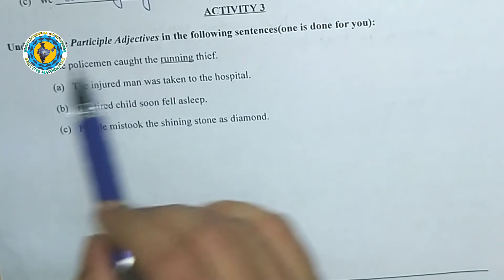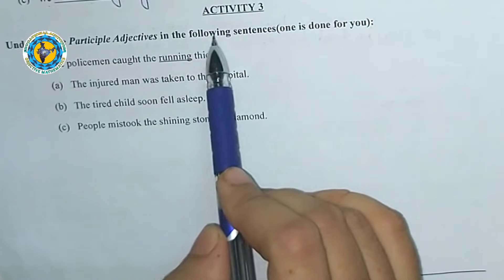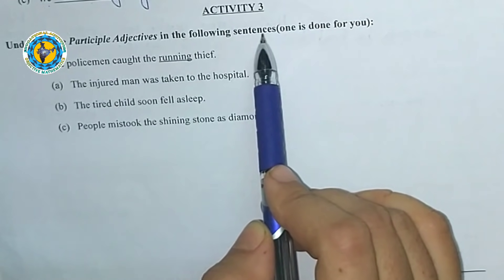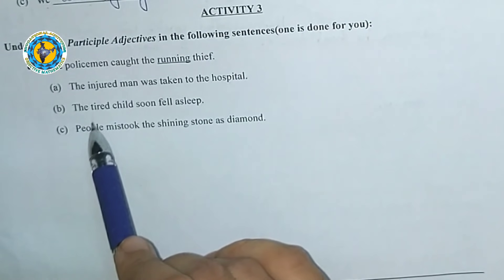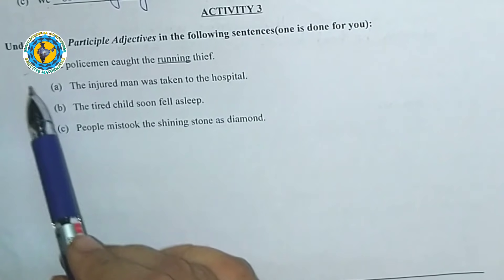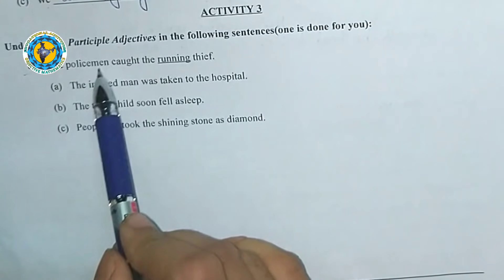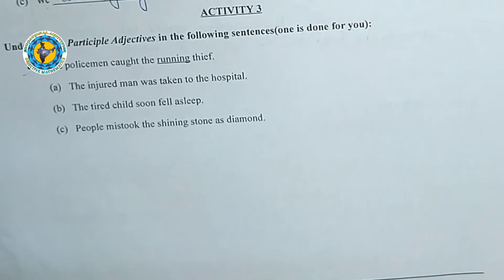Activity Three: Underline the participle adjectives in the following sentences. One is done for you. For example: 'The policeman caught the running thief.' Here, 'running' is the participle adjective that describes the noun 'thief'.